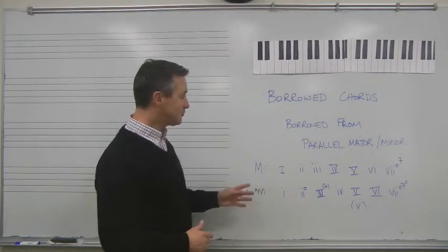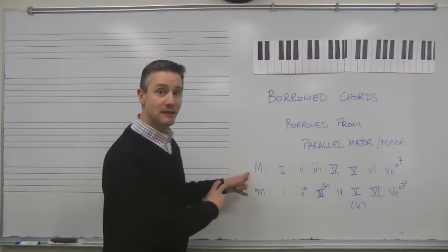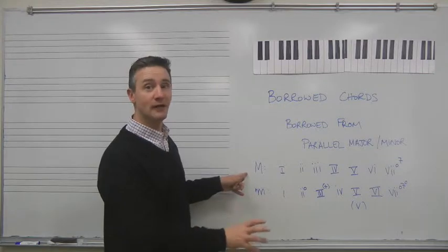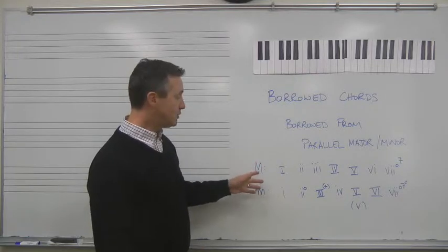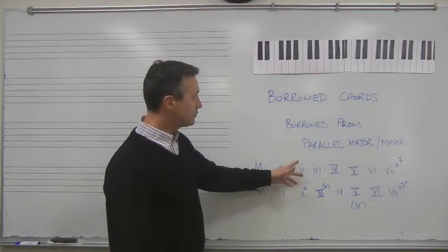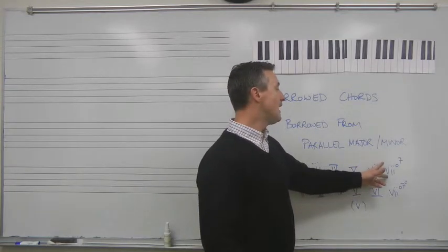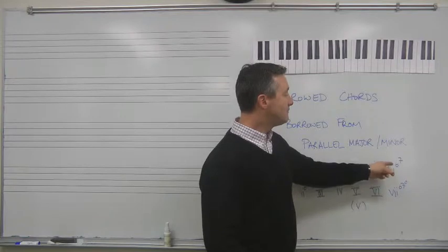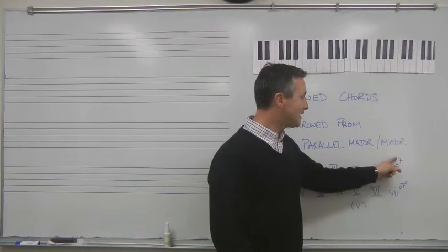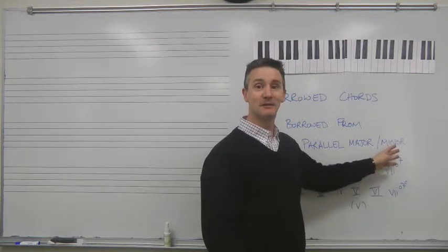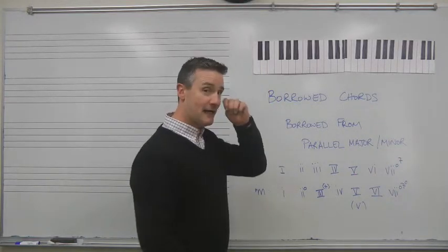So to that end, let's just remind ourselves. If we were in major, what would our chord qualities be? These are just the chord qualities you would find diatonically in major. You would find a major I chord, a minor II chord, a minor III chord, a major IV chord, a major V chord, a minor VI chord, and you would find a diminished VII chord with a diminished minor VII chord. And that's important because that becomes important when we start talking about borrowing.